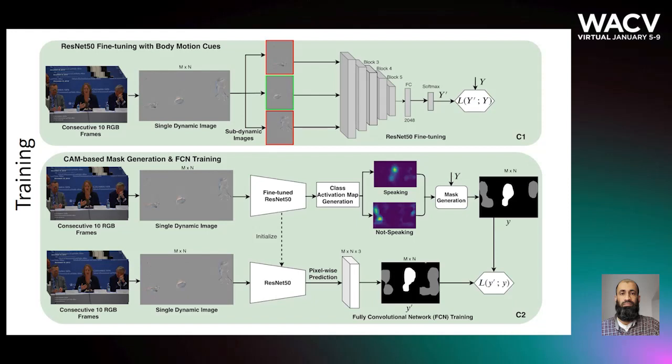Finally, the trained ResNet-50 is also integrated into a fully convolutional network architecture. This architecture produces three channels having the meanings: speaking, not speaking, and background — which is called pixel-wise prediction.